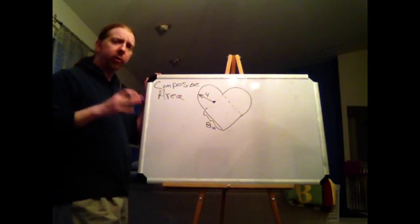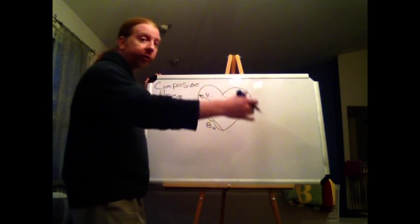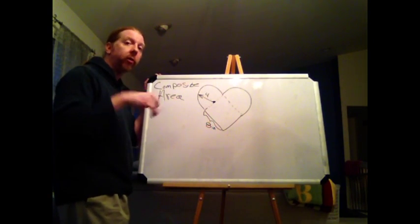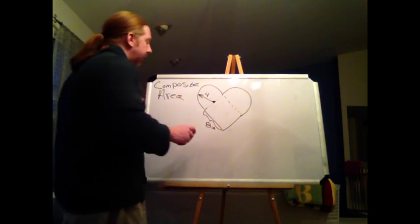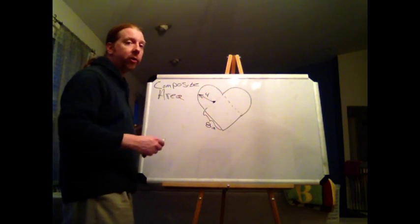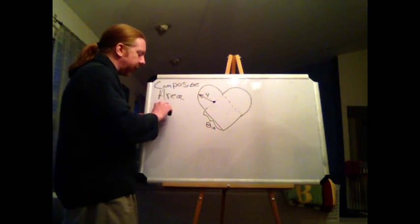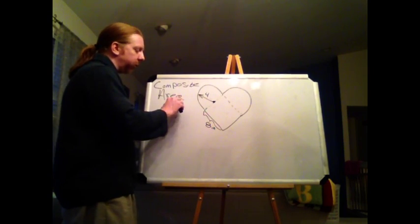Now there are two ways you could look at this. You could look at it as two half circles. Remember when you do a half circle, you have to find the area of one circle and divide that by 2. In this case, I have two half circles, which is the equivalent of one circle. So the area of the two half circles will be pi r squared.